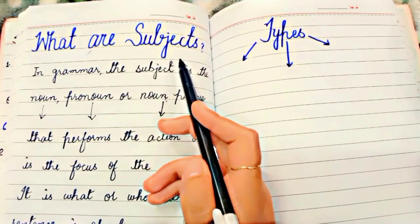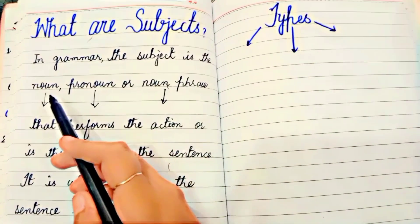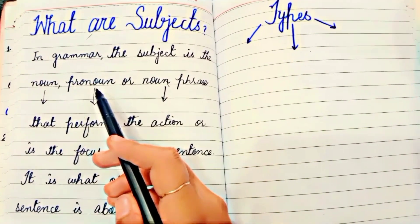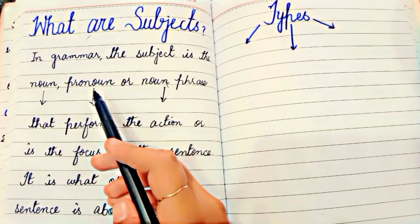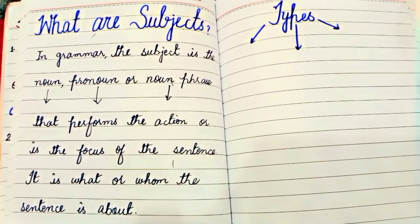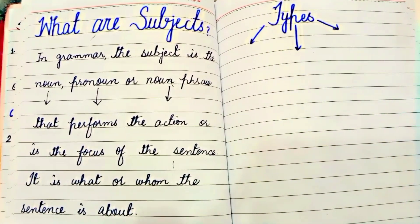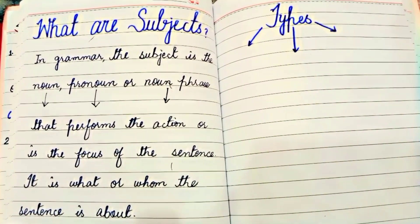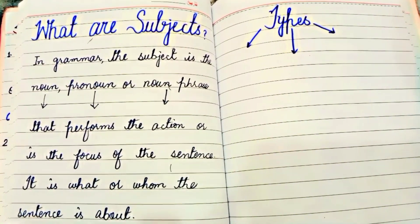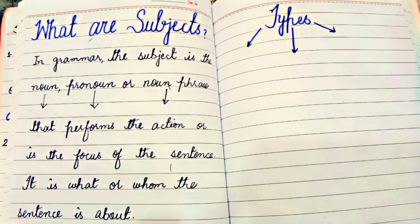Today's topic is: what is a subject and what are its types? The subject is what you are talking about, or what you are working on in the sentence. In grammar, the subject is a noun, naming word, pronoun that can be used instead of a noun, or a noun phrase that performs the action or is the focus of the sentence. It is what or whom the sentence is about.